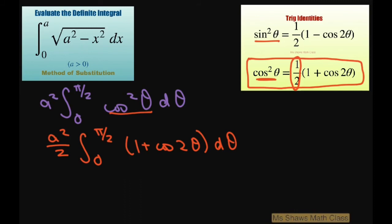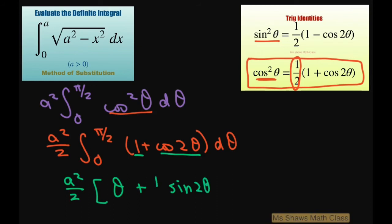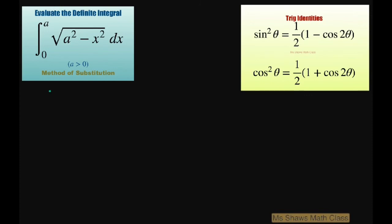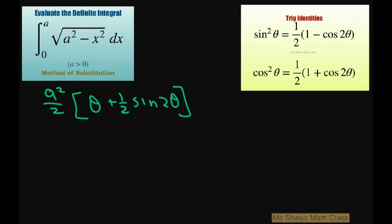Now let's integrate. We have A squared divided by two. The antiderivative of one is theta, and for cosine of two theta, that gives sine of two theta divided by two. So our antiderivative is theta plus one half sine of two theta, evaluated from zero to pi divided by two.